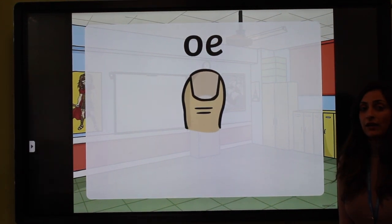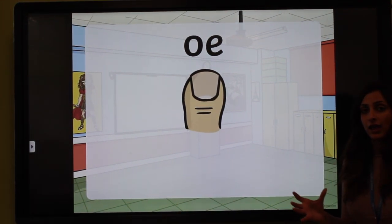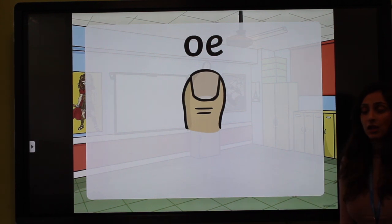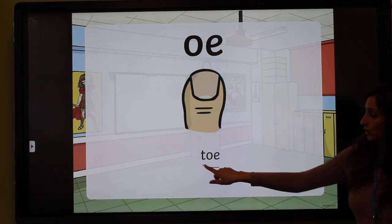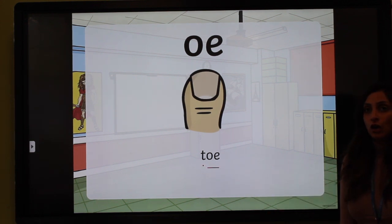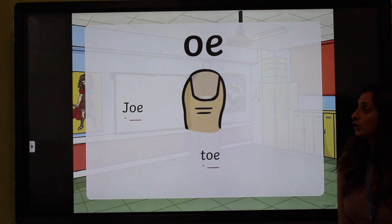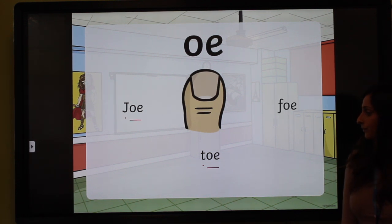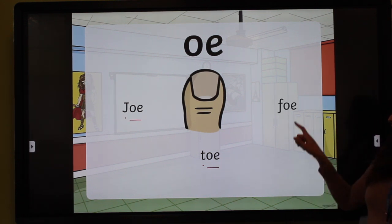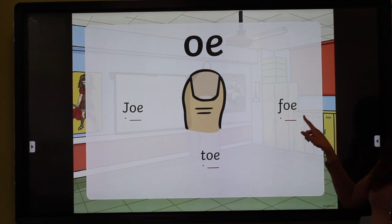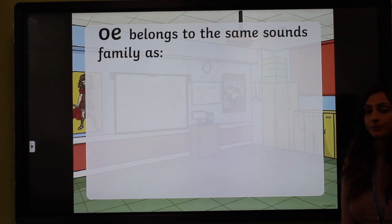Here we have the OE sound, where an O and an E come together to make the long O sound, like in the word toe, t-o-e, toe; in the word joe, j-o-e, joe; and in the word foe, f-o-e, foe.